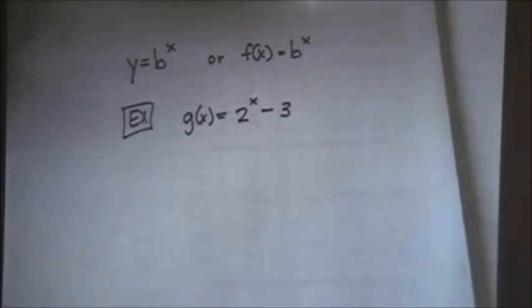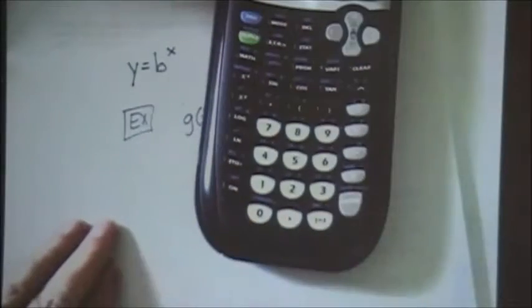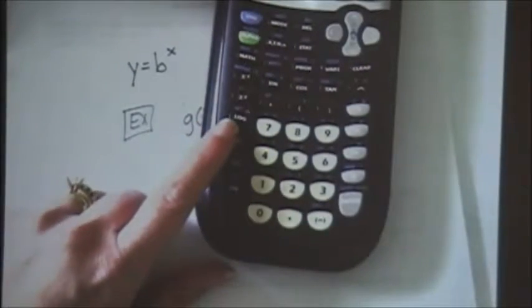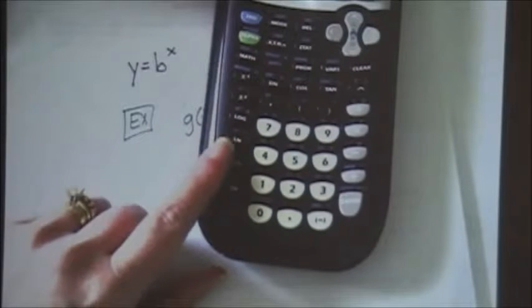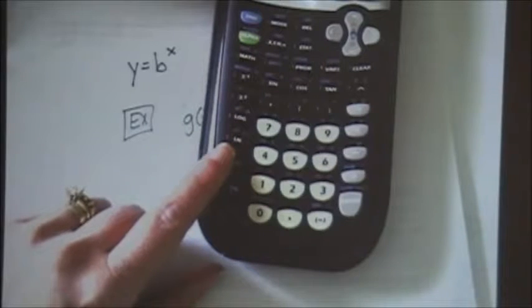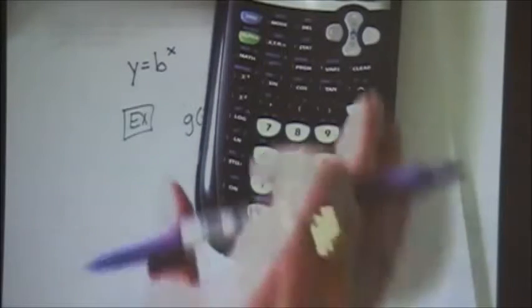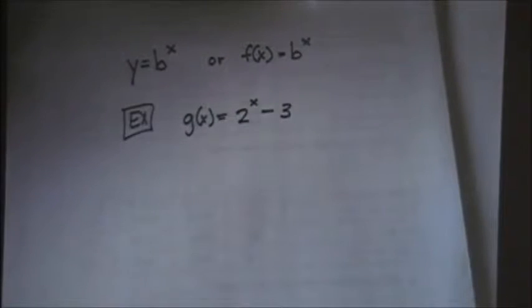You will notice on your calculator you have a log button. Right down here next to the 7 is log. Right underneath that is a button that says ln. That's natural log. That's the same thing as log base e. And we'll talk a lot more about that later.